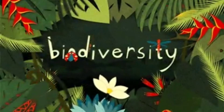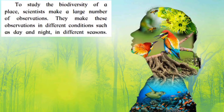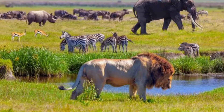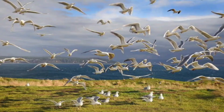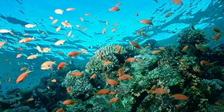Do you think it is easy to study biodiversity? No. To study the biodiversity of a place, scientists make a large number of observations. They make these observations in different conditions such as day and night and in different seasons. Jab scientist kisi sthan ki jaiv vividhata yani biodiversity par adhyayan karte hai, toh woh us place ka din raat, har ek season aur sabhi paristhitiyon mein observations karte hai.